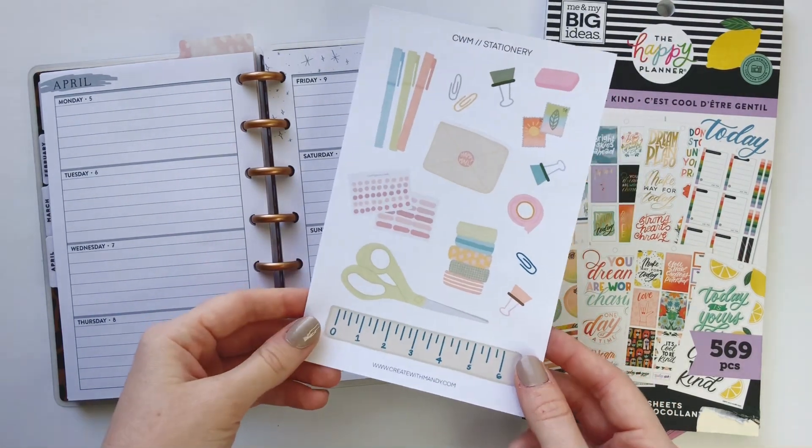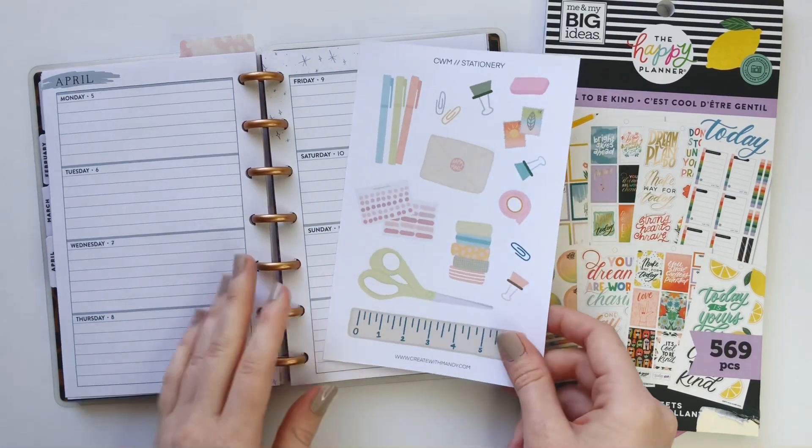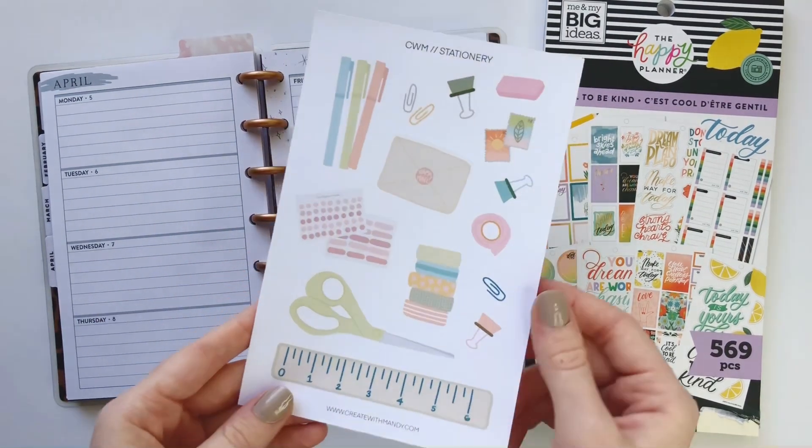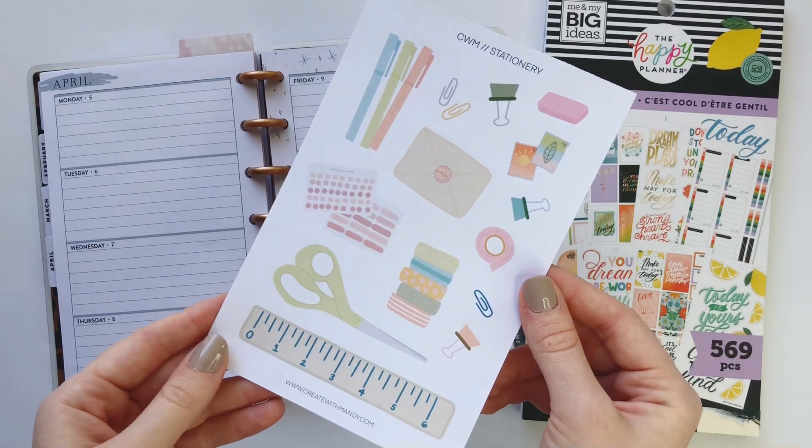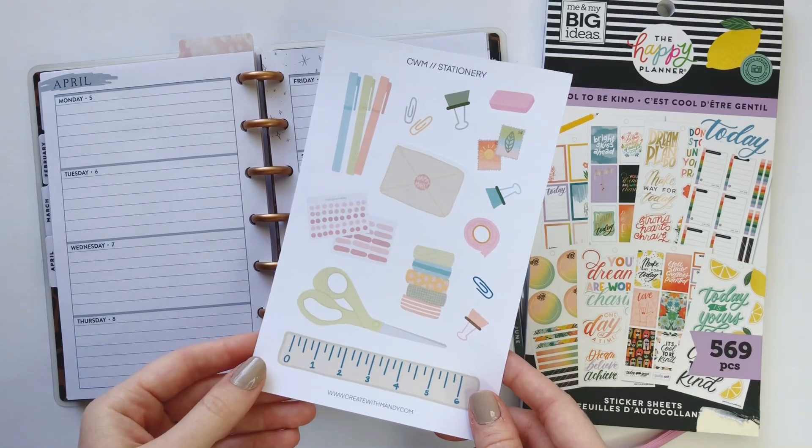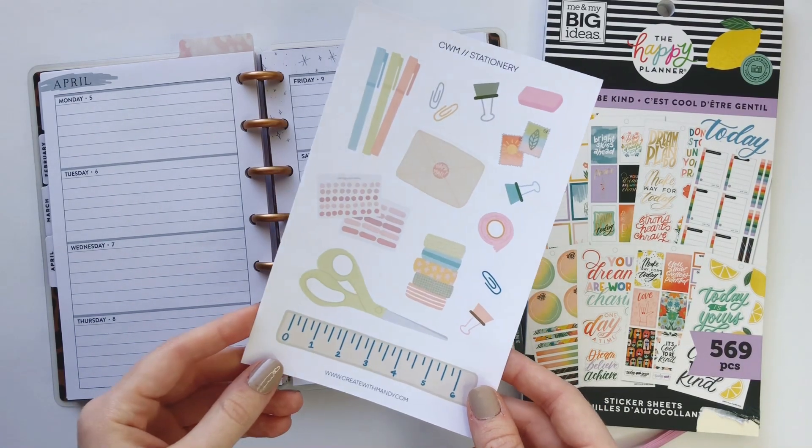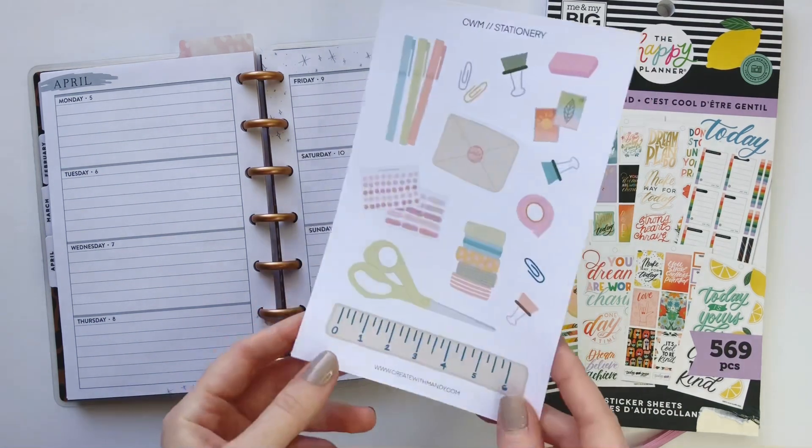This was so fun. I love all the little desk things you might find: scissors, washi tape, stickers, you know, all the things. The color palette is really fun too. I think it's soft with a little bit of spring in there. So cute. I will have this link down below and I also have a little coupon code.